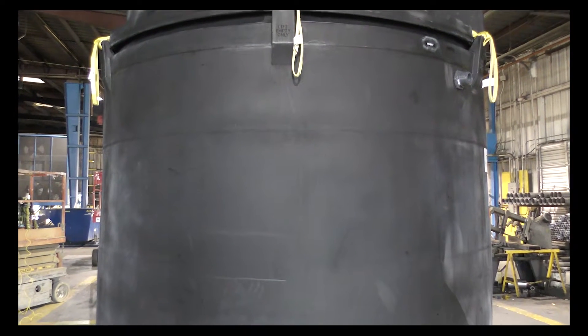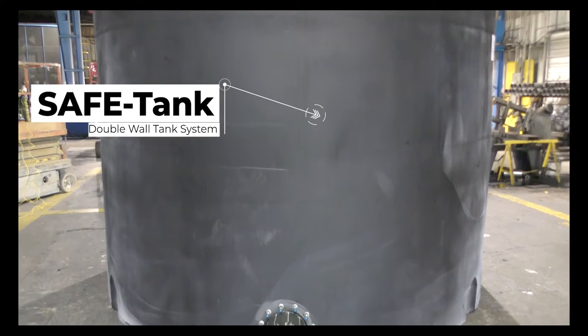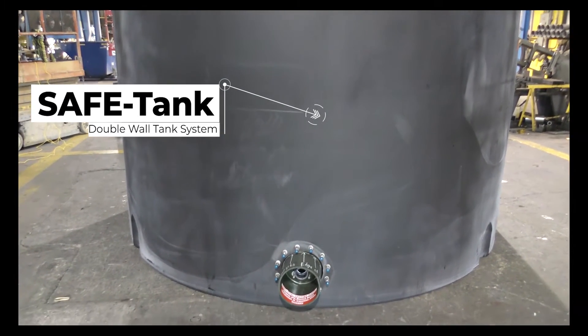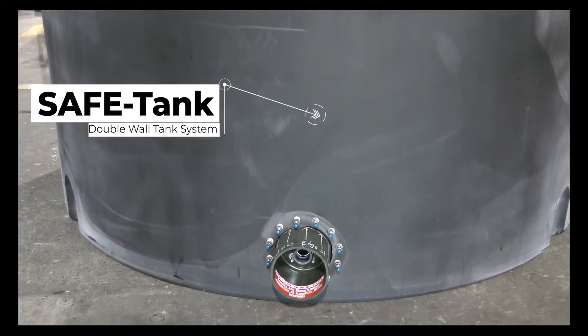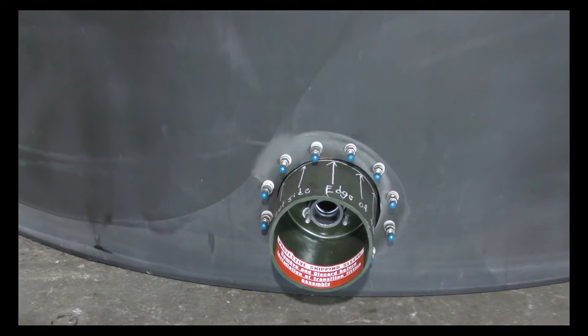This is a short video overview of how to properly set the safe tank in place at your facility. It is critical that you have the bellows transition alignment sleeve aligned correctly and that you have a crane or boom truck available to do this.